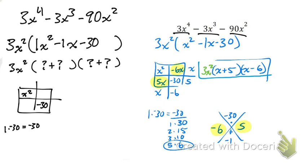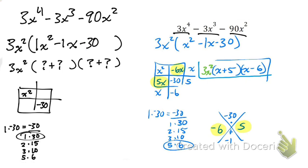I'm going to list out all the numbers that multiply to give me 30. I always start with 1: one times 30. Then 2 times 15. Then 3 times 10. Four doesn't work. Then 5 times 6 gives 30. After five the next would be six, but I already have six listed — that's when you know you're done, when you circle around to a number you already used. So those are all the factor pairs that multiply to give 30.